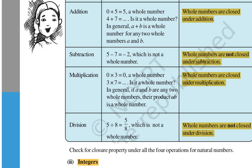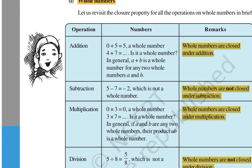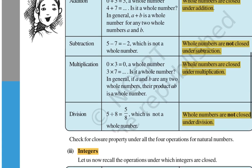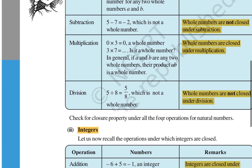To revise: closure property means if you apply an operation and the result belongs to the same set, the property is followed. If two whole numbers are added and the result is a whole number, closure follows. Subtracting two whole numbers may give an integer (not a whole number), so not closed under subtraction. Multiplying two whole numbers gives a whole number — closed under multiplication. Dividing a whole number by another may not give a whole number — not closed under division.